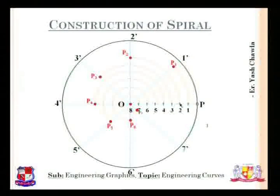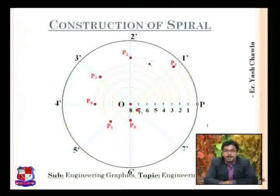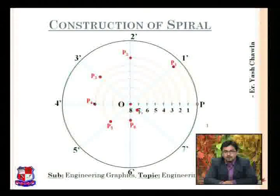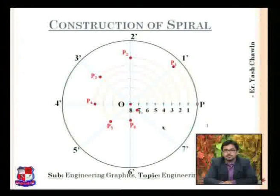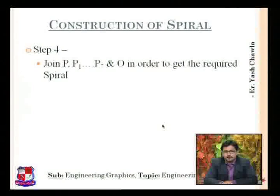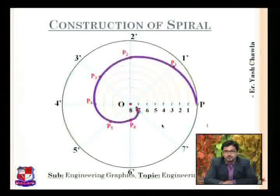From O to 2, we draw an arc which starts from 2 and ends on the line passing through O2-dash, giving us point P2. Similarly we get P3, P4, P5, P6, and P7. Now joining P, P1, P2, P3, P4, P5, P6, P7, P8 up to the last point, we get our required spiral.